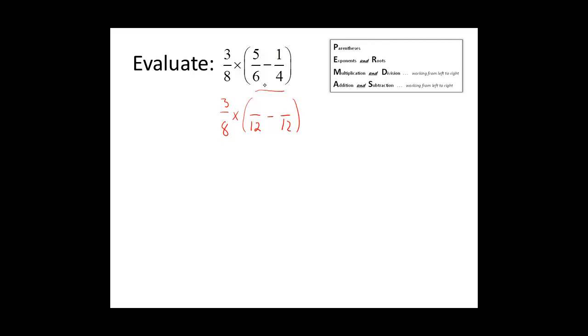We multiplied 6 times 2 to get 12, so we need to multiply this numerator times 2. 5 times 2 is 10. We multiplied 4 times 3 to get 12.